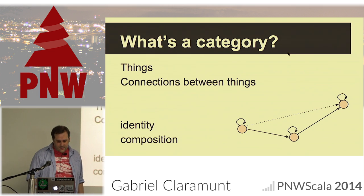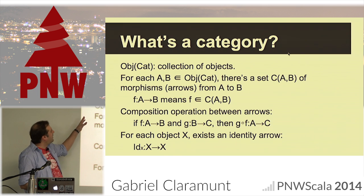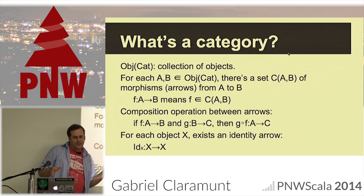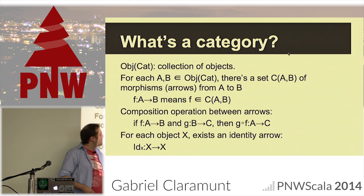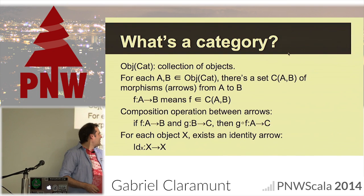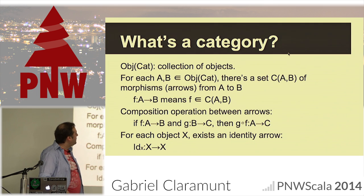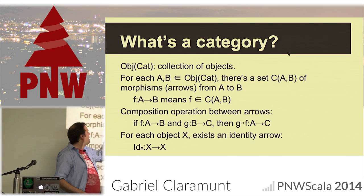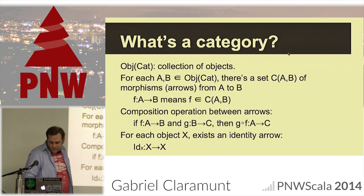More formally, a category is a collection of objects and a collection of arrows or morphisms. For each pair of objects of the category, f from A to B means f belongs to the set of arrows from A to B. That's the formal way of saying what I already said in other words.